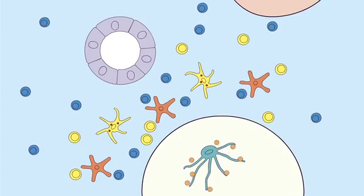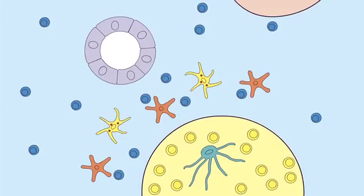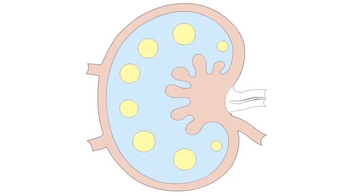Once present in the developing lymphoid organ, the FDC secrete the chemokine BLC, which attracts B-cells from the T-cell areas, thus creating a discrete B-cell follicle.